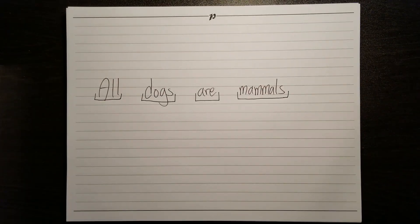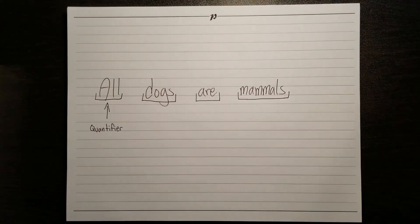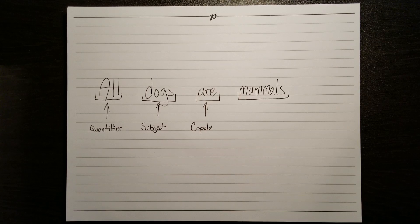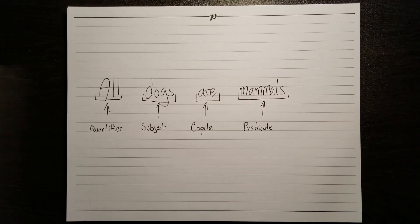These statements have four components. First, there's the quantifier. This tells you how many things you're dealing with. Then there's the subject, which tells you the category you're quantifying over. Then you've got the copula. This will tell you whether the subject does or does not belong to the predicate, which is the category at the end of the statement.